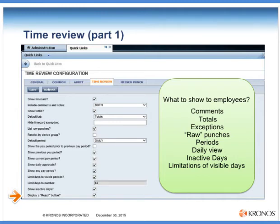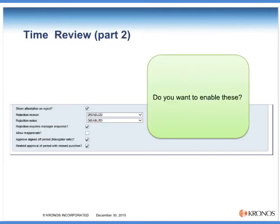The second part of the time review tab covers whether you want to enable additional features. Do you want to show the attestation pop-up — that confirmation text when the employee rejects?